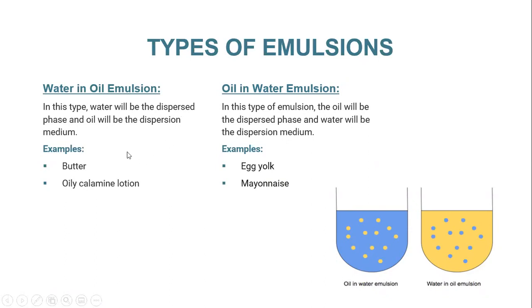In water-in-oil emulsions, water will be the dispersed phase and oil will be the dispersion medium, which means water droplets will be dispersed throughout the oily phase. Examples of this type of emulsion include butter and oily calamine lotion.